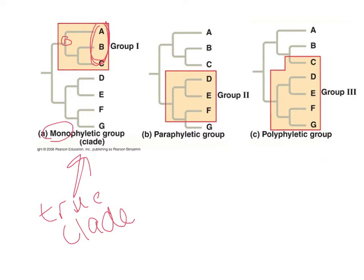A paraphyletic group includes a common ancestor but doesn't include all of its descendants. In part B here, group 2 is paraphyletic because it leaves out taxon G.